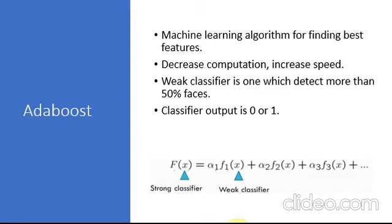AdaBoost is a machine learning algorithm for finding the best features. There can be approximately 160,000 plus feature values within a detector at 24x24 base resolution which needs to be calculated. But only a few set of features will be useful among all these to identify a face. AdaBoost is used to remove redundant features and choose only the relevant features.